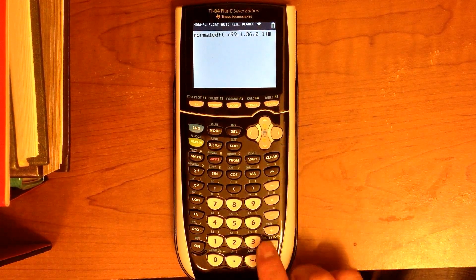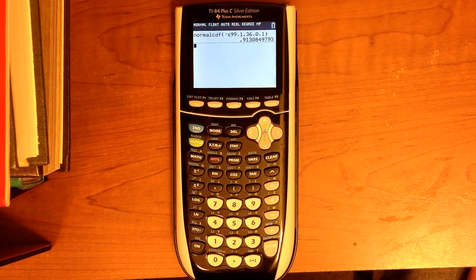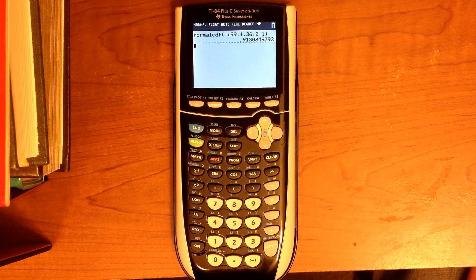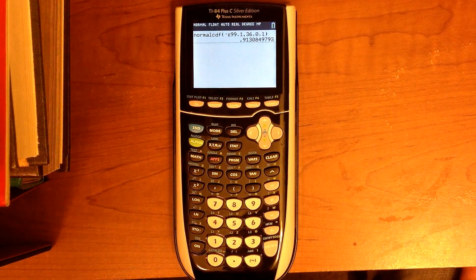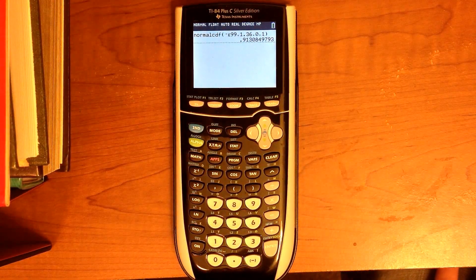Press paste, hit enter again, and you will see that the proportion of values with a Z-score less than 1.36 is 0.9131.